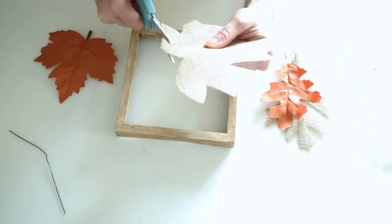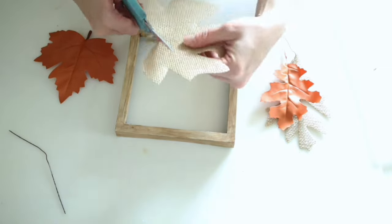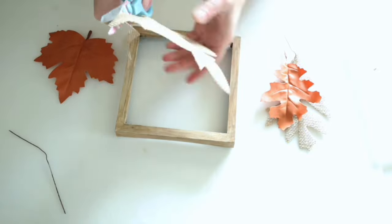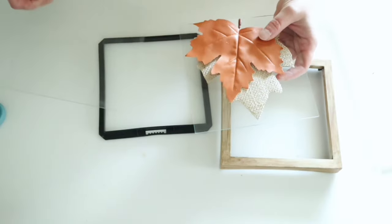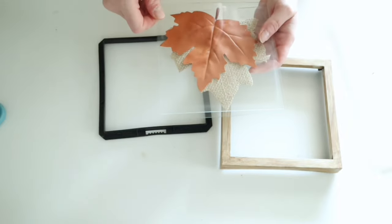Now for the smaller frame, I did kind of have to cut down that burlap leaf a little bit to make it fit, but then I'm just going to take both of those leaves and kind of layer them and then place them in between the glass.